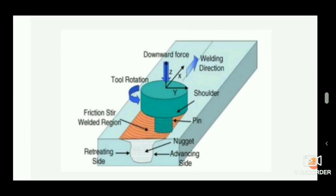Hello viewers, welcome to Engineering Study Materials. Today we are going to discuss friction stir welding. It is one of the welding processes that can join different metals. The main advantage of this process is there are no toxic fumes emitted, unlike conventional welding.